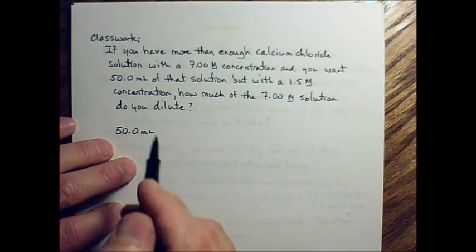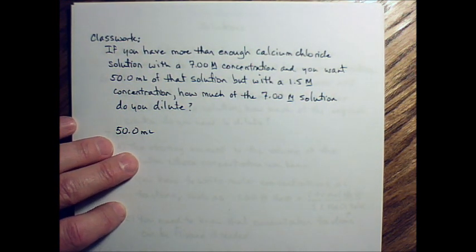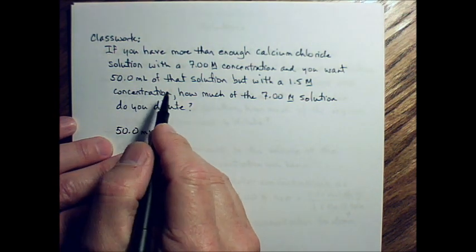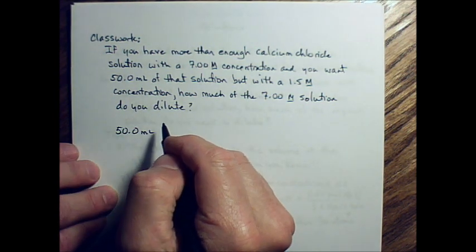Alright, so we're going to start with the given amount of the species whose concentration we know. That's 50 milliliters of this calcium chloride solution.